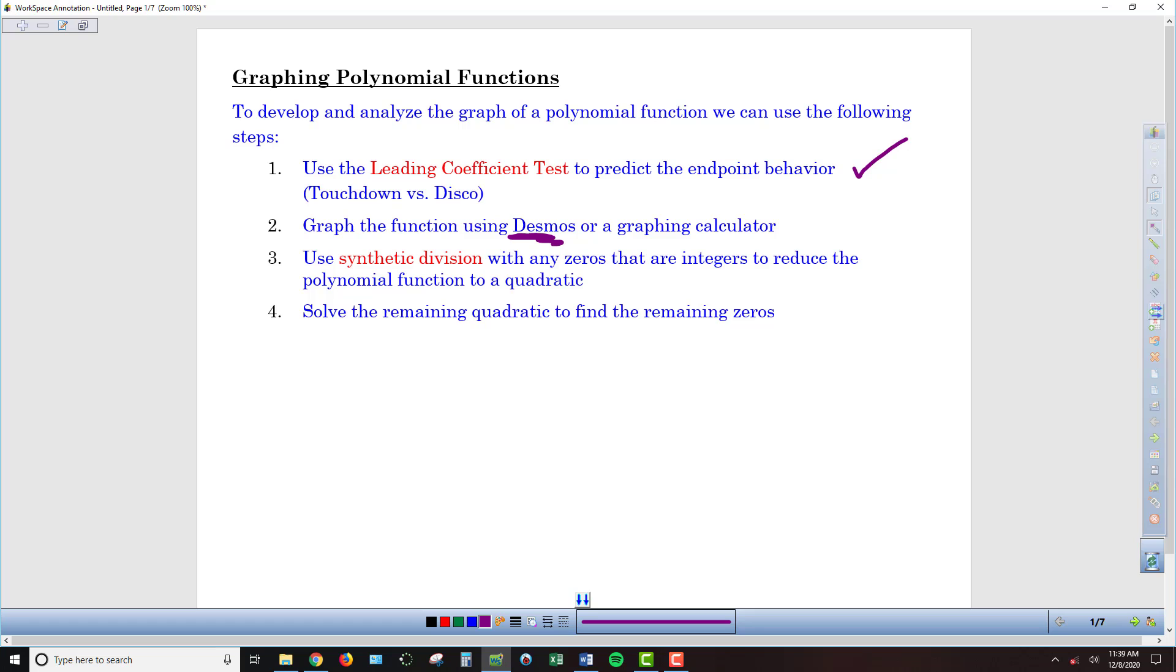So we have to use this graph to help us find the zeros that are either irrational, that have square roots in them, or are imaginary. The way we're going to do that is we're going to use the graph that we generate, find the zeros that are integer values, and then use synthetic division to help reduce our higher-order polynomial function down to a quadratic, so down to where the highest exponent is only x squared. Then we'll use the same quadratic techniques that we've worked on previously to find what those remaining zeros are.